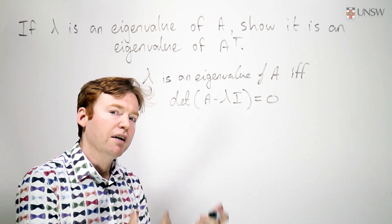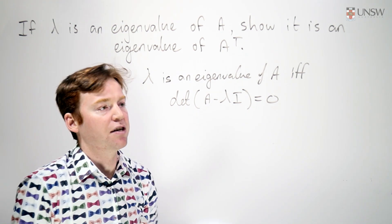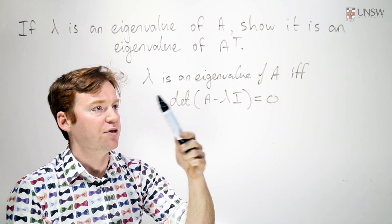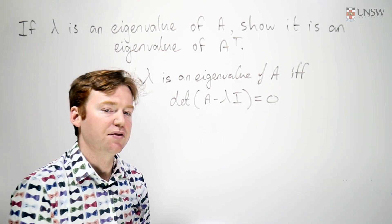Remember that the eigenvalues are all the solutions to the characteristic equation. So lambda is an eigenvalue of A if and only if it satisfies this equation.